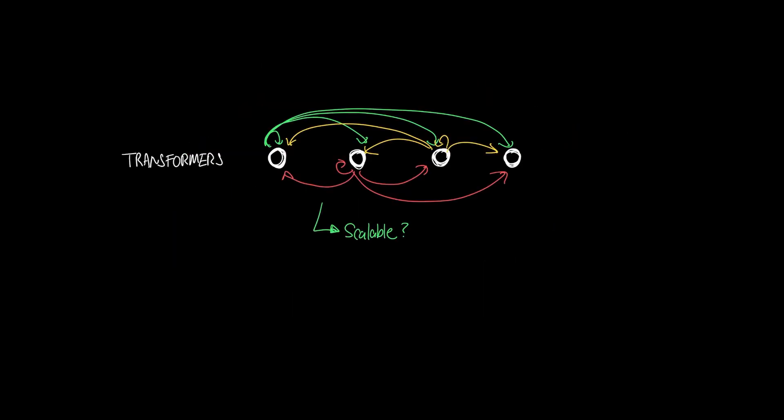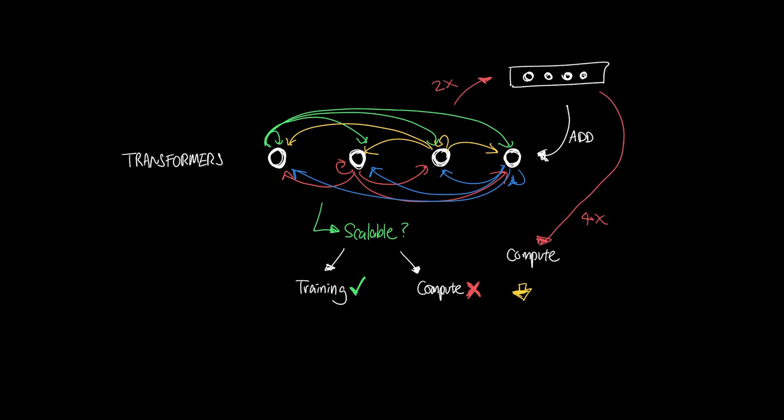Although Transformers are scalable when it comes to training, it's not so scalable when it comes to compute. Because every token needs to be compared with every other token in a sentence, if the length of the sentence doubles, the compute required to process this quadruples. In computer science terms, we call this O of N squared complexity.